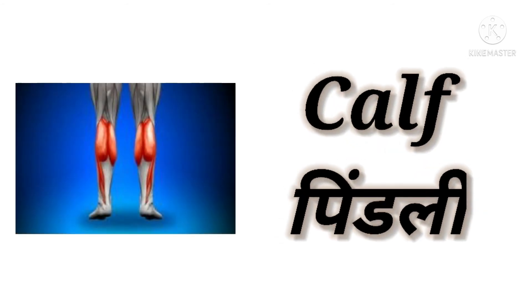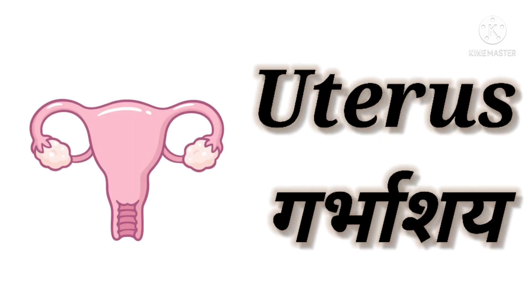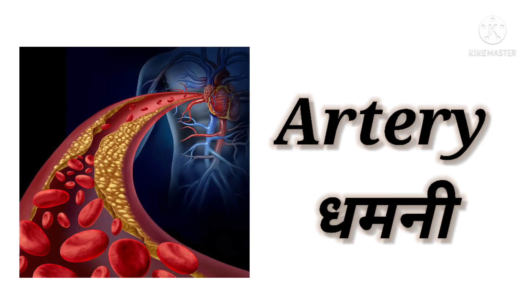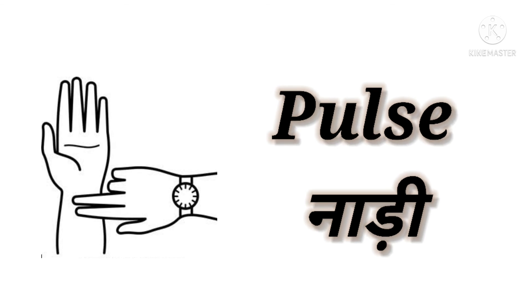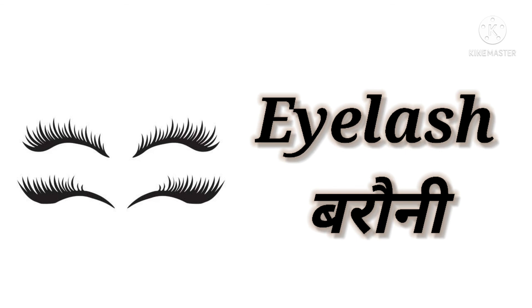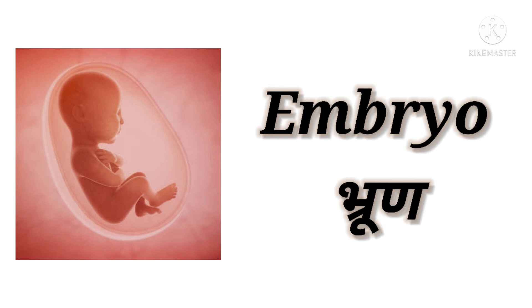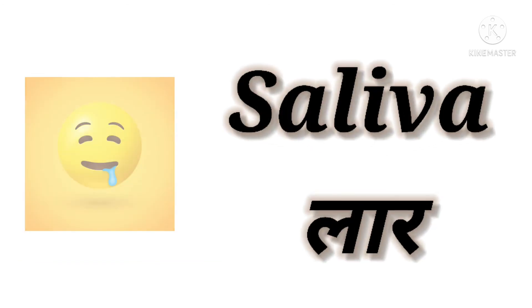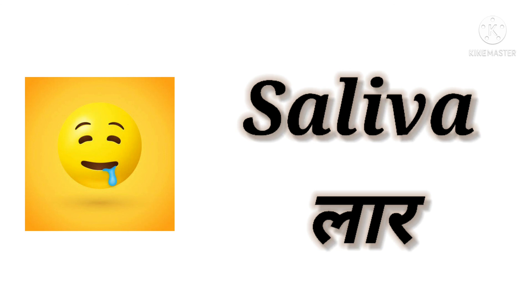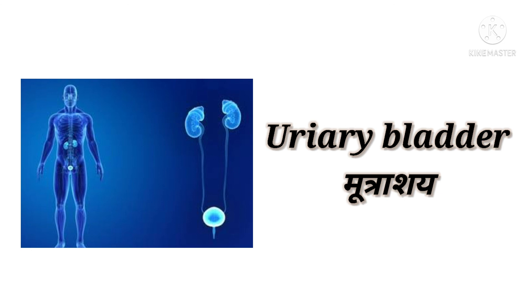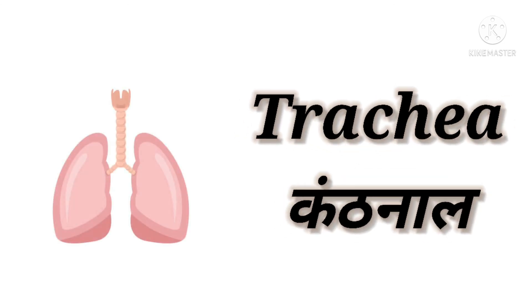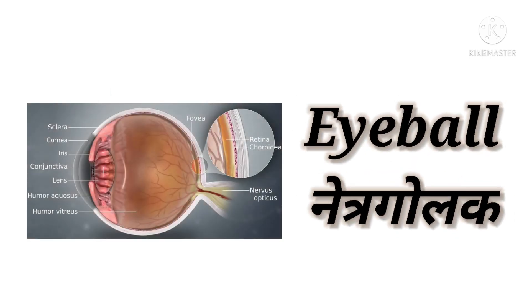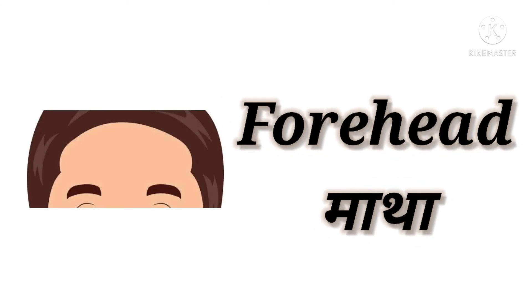Calf yaani Pintli. Uterus yaani Garbhashay. Artery yaani Dhamnee. Pulse yaani Nadi. Eyelash yaani Bauroni. Embryo yaani Bhrun. Saliva yaani Lar. Urinary Bladder yaani Mootrashay. Trachea yaani Kandunal. Eyeball yaani Nethragolak. Forehead yaani Maatha.